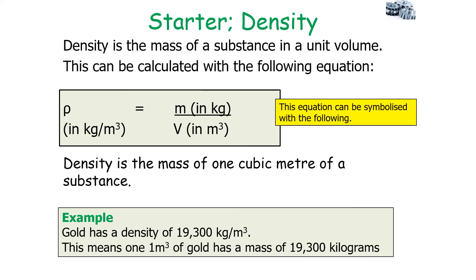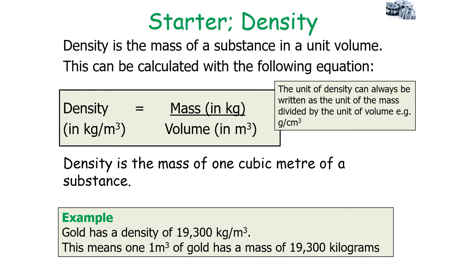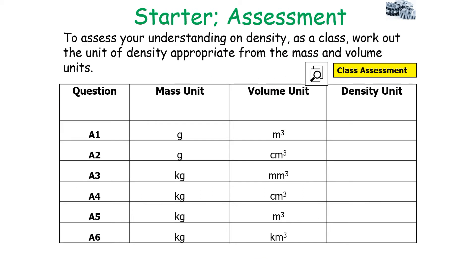Remember our equation for density: rho equals m over V. The unit of density can be written as either kilograms per metre cubed or kg m to the minus 3. Importantly, the unit of density can always be written as the unit of mass divided by the unit of volume. For example, if the unit of mass is grams and the unit of volume is metres cubed, density is grams per metre cubed. If mass is in grams and volume is centimetres cubed, density would be grams per centimetre cubed.